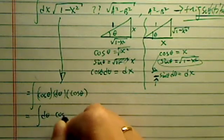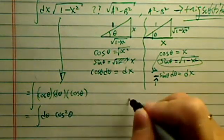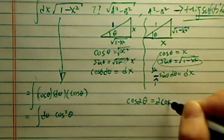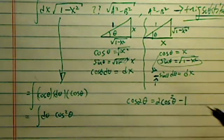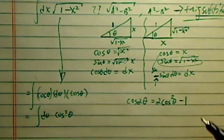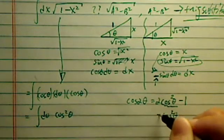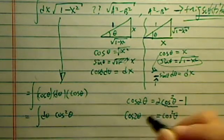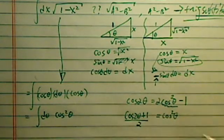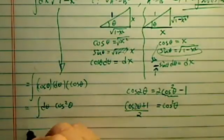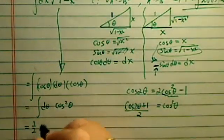So it's d theta cosine squared of theta. Now, notice that cosine 2 theta is equal to 2 cosine squared theta minus 1. So we're going to solve for cosine theta here. Squared is equal to cosine of 2 theta. I'm going to plus 1 divided by 2. So I'm going to substitute 2 to this one back in there.